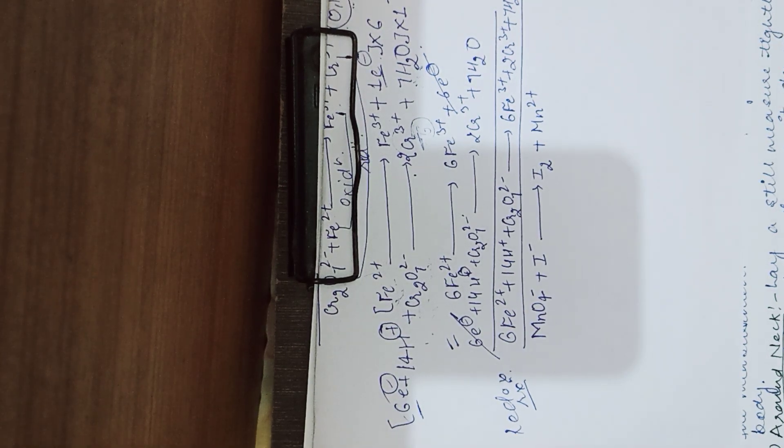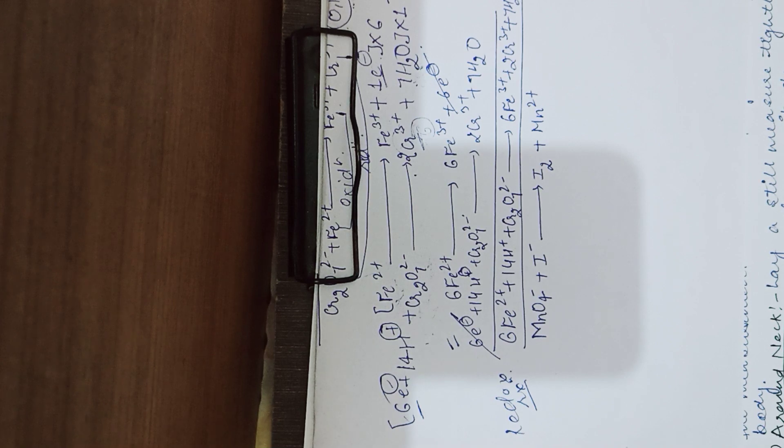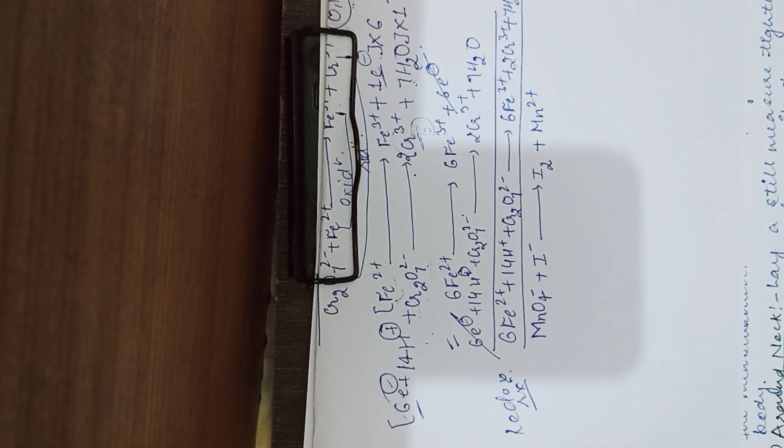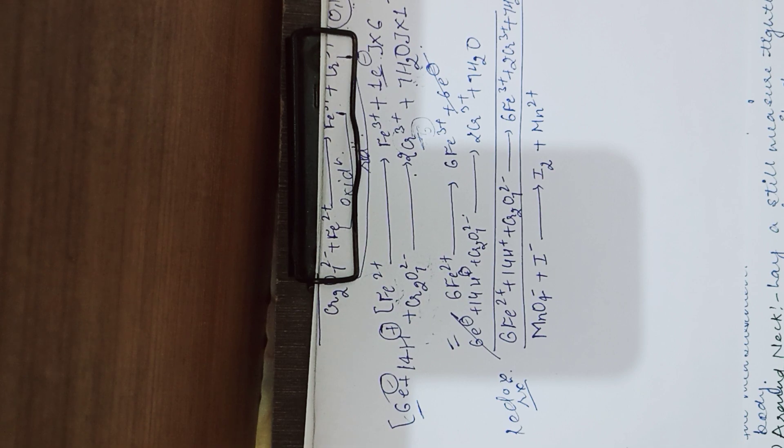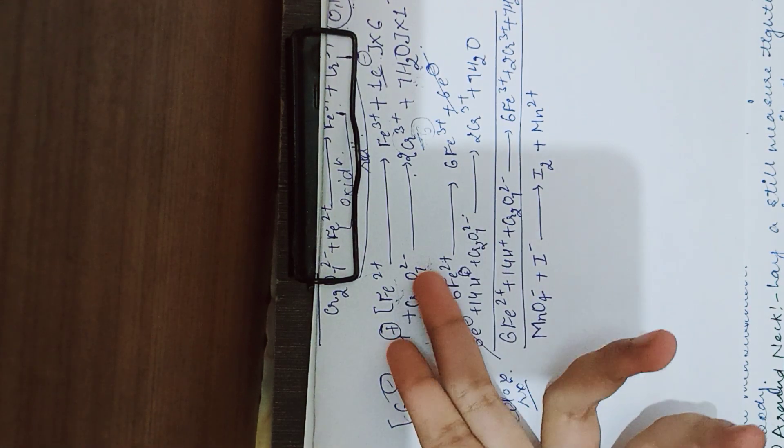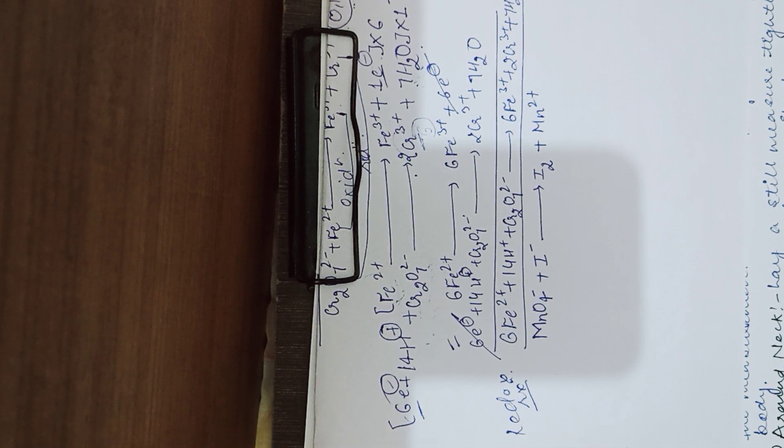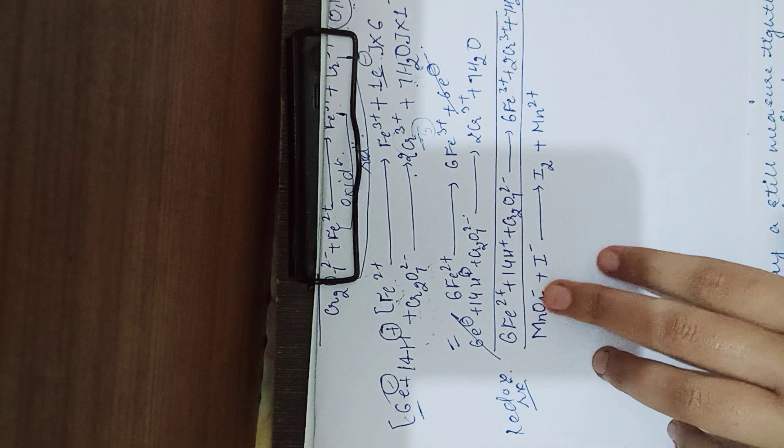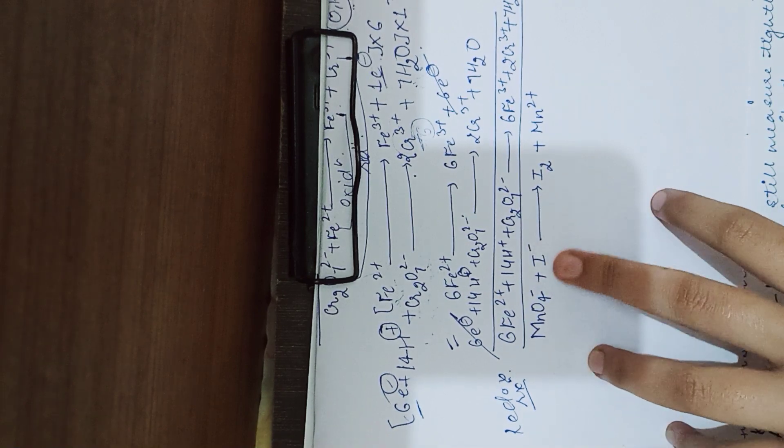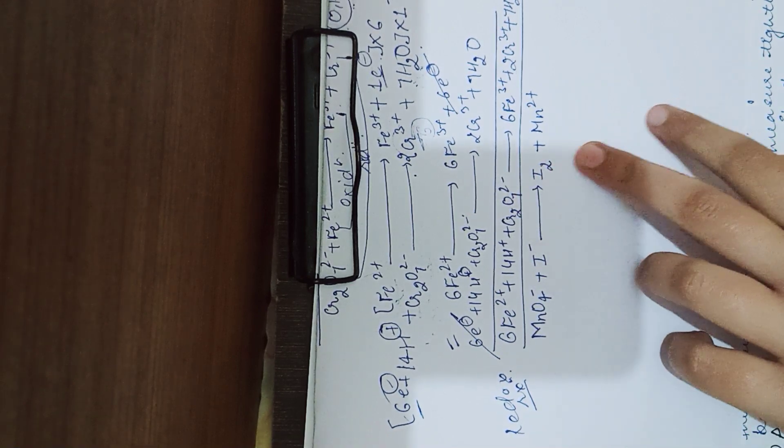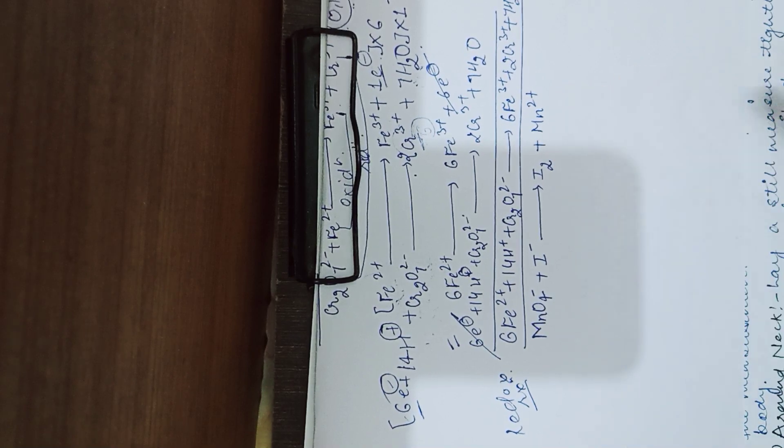Hello everyone, welcome back to my channel. Kaise hain aap sab log? I hope all of you are fine. So in this video we are going to start with another example of balancing a redox reaction. In the previous video we discussed the above mentioned example, and this video mein hum discuss karengi another example: MnO4 minus plus I negative gives you I2 iodine plus Mn2 plus, clear?